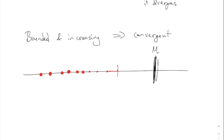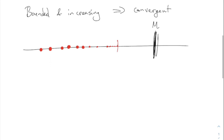So it is true that bounded and increasing implies convergence. And the same is true if it's decreasing every time, because bounded always means bounded in absolute value — it has an upper bound and also a lower bound. If it decreases towards the lower bound, that also means it has to converge. So really, the monotone convergence theorem is not just about increasing; it's about any sequence which is either increasing or decreasing.